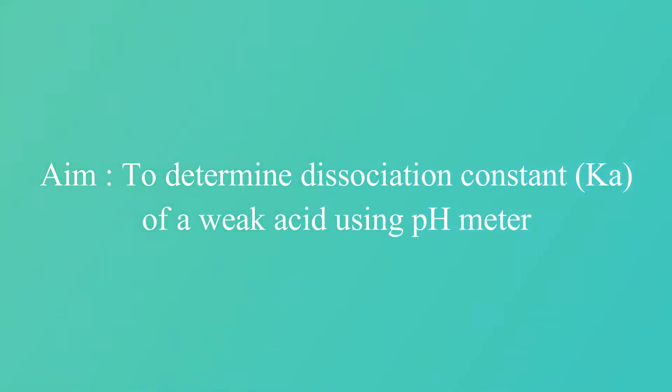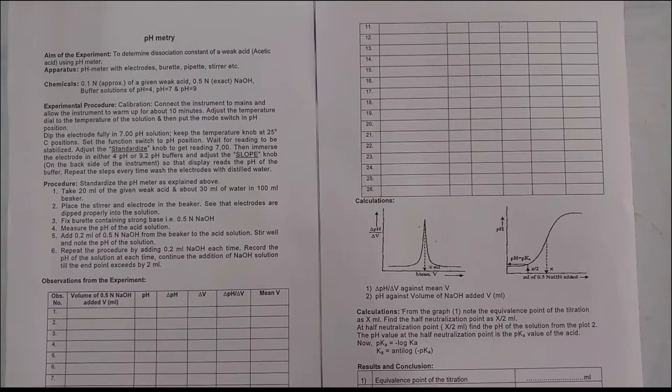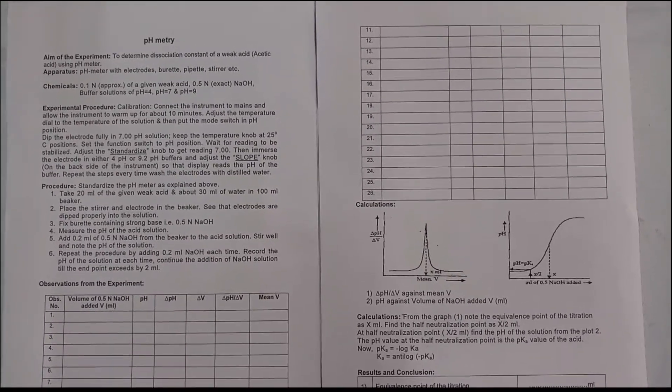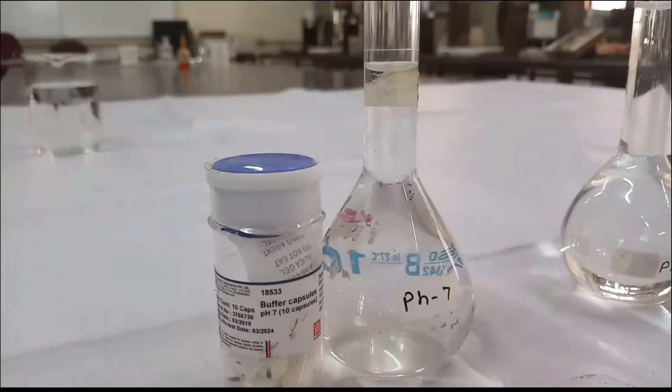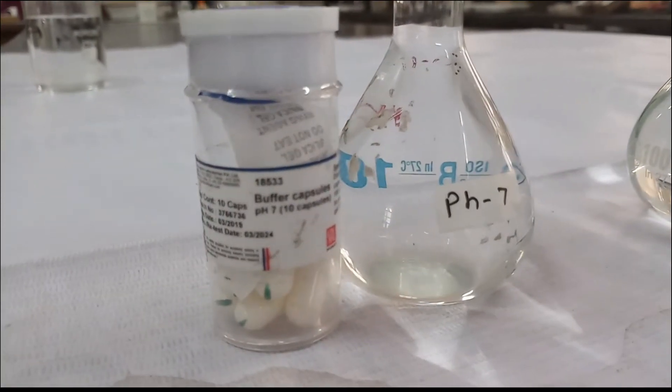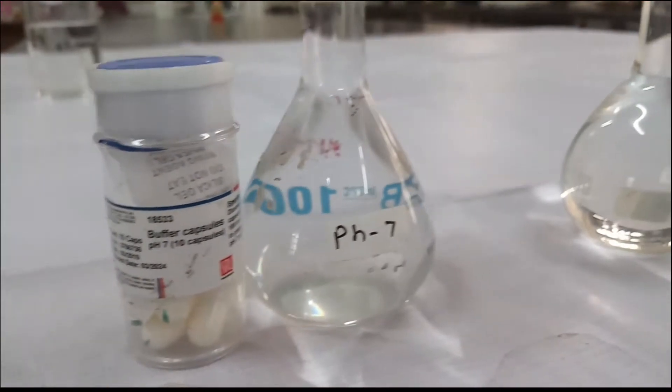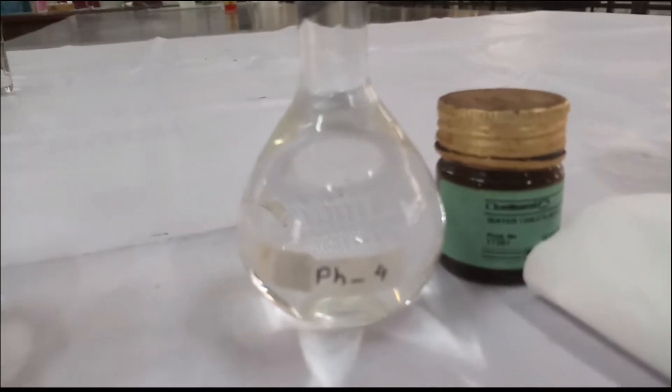Aim of the experiment: to determine the dissociation constant of a weak acid using a pH meter. Material required: buffer solutions of pH 7 and pH 4.